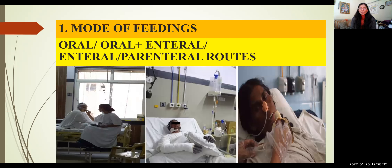I would like to highlight that whatever nourishment we provide to our burn patient is meant for their healing and recovery, at the satiety level and in an affordable budget. The macronutrient and micronutrient requirement is dependent on certain factors like age, gender, percentage of total burn surface area, the pre-morbid nutritional state, and the weight of the patient. Importantly, we also have to take care of their cultural and religious beliefs.